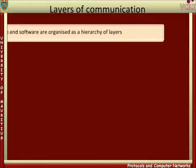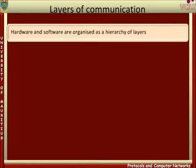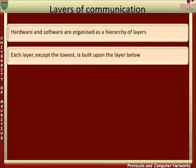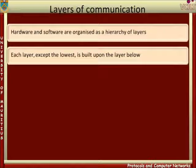In large internet networks, communication between systems is a complicated process, and to cope with this complexity, the hardware and software in the systems are organized as a hierarchy of layers. Each layer performs some of the functions necessary to achieve communication between systems. The layers, particularly higher layers, are mostly implemented as software components of communication networks. It is very important to appreciate the hierarchical nature of communication systems.